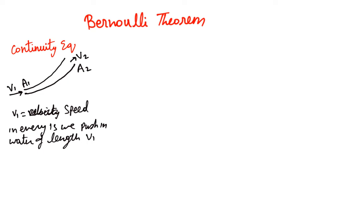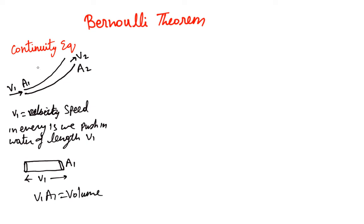So in every second we are pushing in a length v1 of water into this cross-section. We have a cylindrical volume being pushed in, with length v1 and area a1. The volume we are pushing in is v1 times a1. Similarly, on the other end the volume is v2 times a2. So we can say v1·a1 = v2·a2, and this is called the continuity equation.